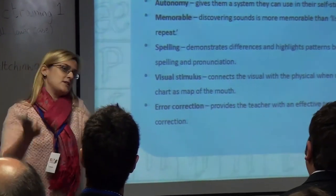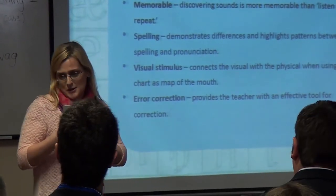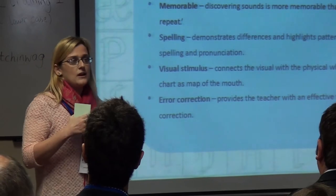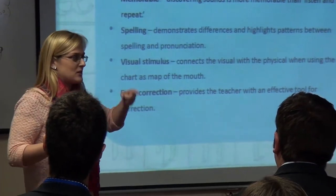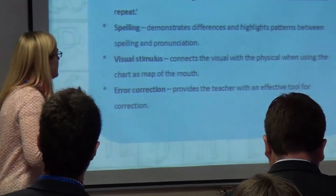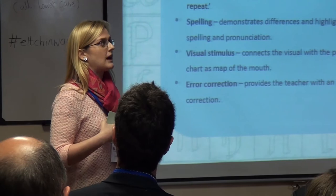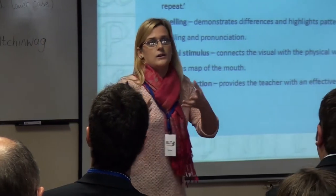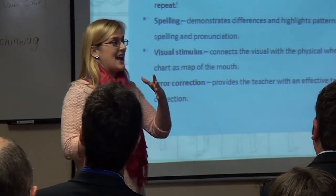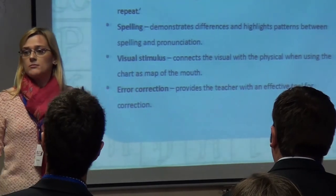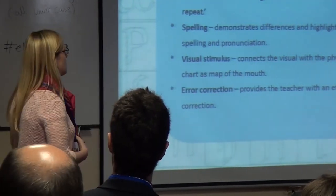Next, spelling — which some people disagree about. I feel there are two advantages in terms of spelling. One, it shows them how unphonetical English is, and using the chart and phonemic script will help them with that. The second is that it does actually help them discover patterns in spelling. For example, looking at the sound 'a', you might see the majority of words are spelled with 'o', some with 'a' like 'want', 'wash', 'watch', and some with 'au' like 'Australia' and 'Austria'.